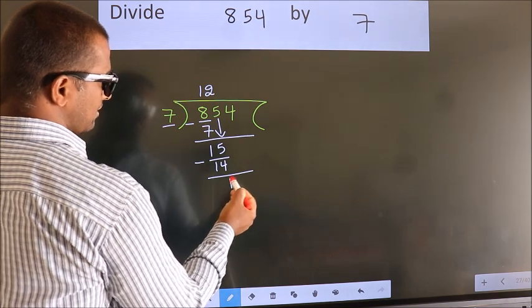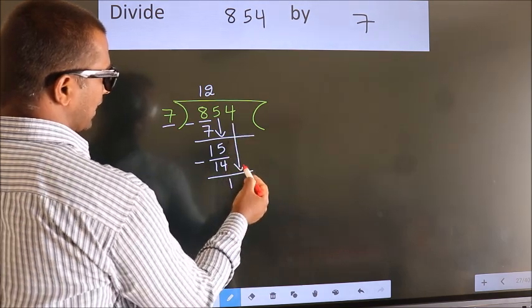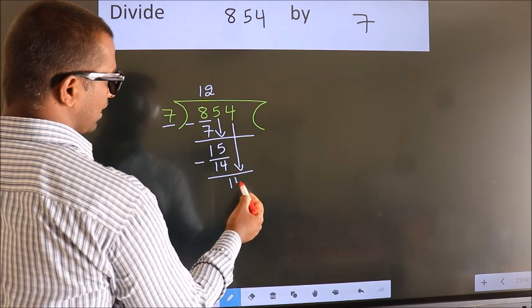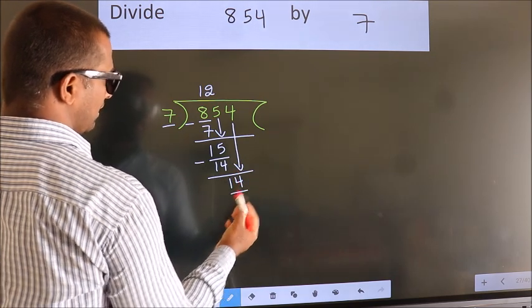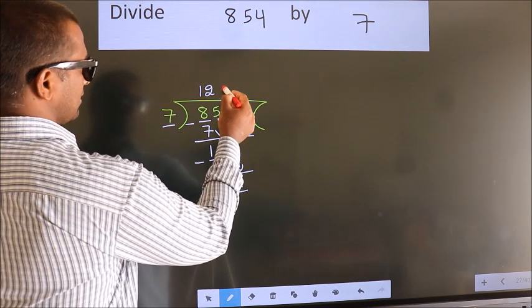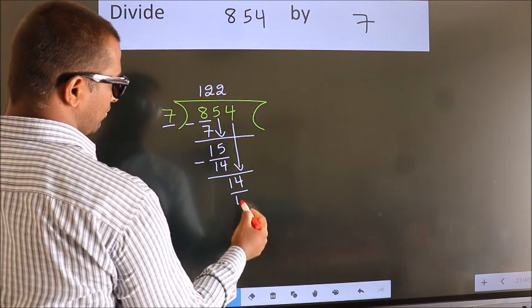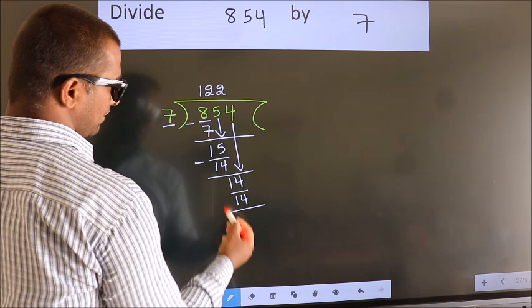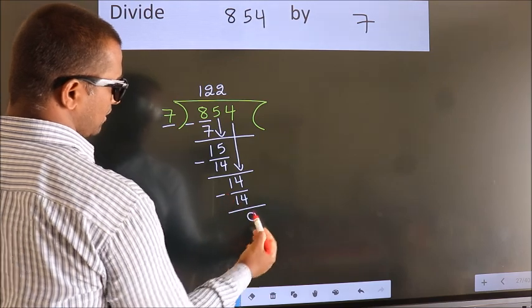After this, bring down the beside number. So 4 down, so 14. When do we get 14? In 7 table. 7 twos, 14. Now we subtract. We get 0.